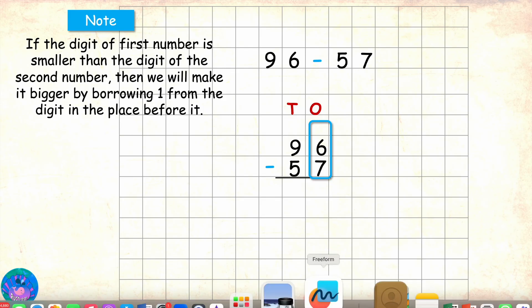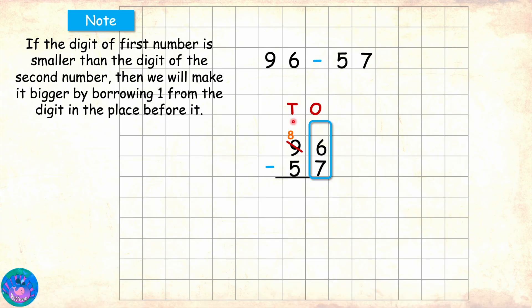If we borrow 1 from 9, then 9 minus 1 which is 8 will remain there. So after borrowing 1 from 10th place, will 6 become 7 as 6 plus 1 equals 7? Now Sam, don't you remember 1 in 10th place is equal to 10 in ones place. So when we borrow 1 from 10th place, the ones place gets 10 more and not 1 more. So the 1's digit is now 10 plus 6 which is 16.